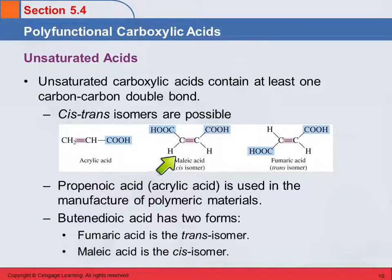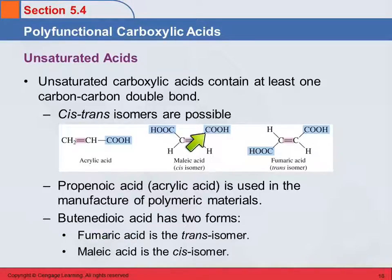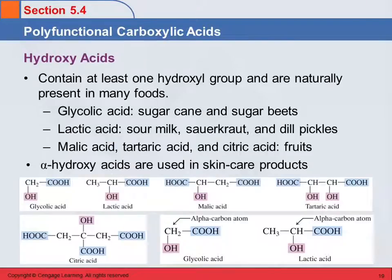The IUPAC name for the dicarboxylic acid is butenedioic acid — four carbons is butane, with the double bond it becomes butene. So we've got cis-butenedioic acid and trans-butenedioic acid, and they've got different common names — maleic and fumaric.